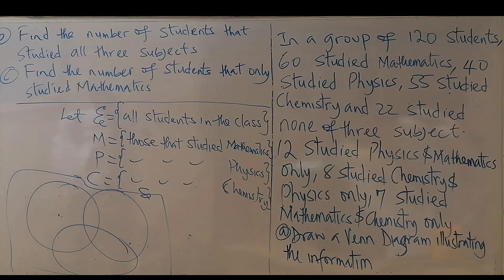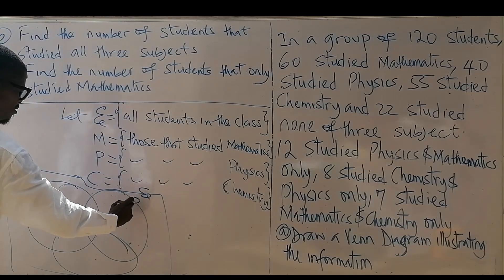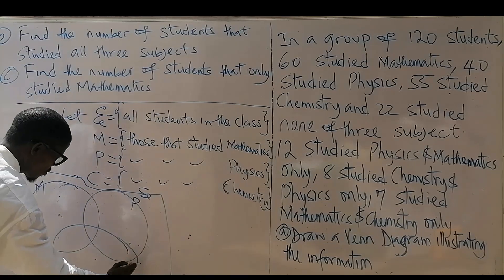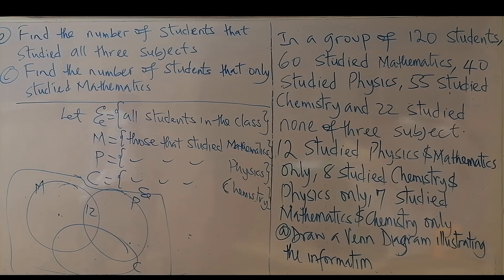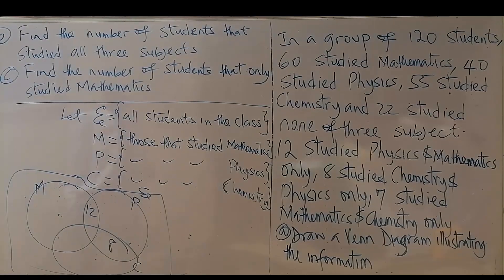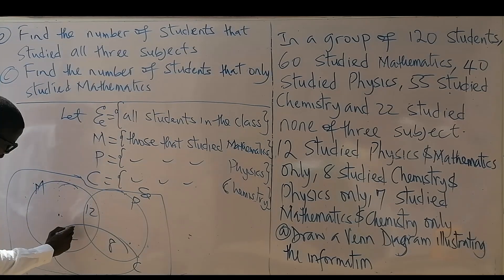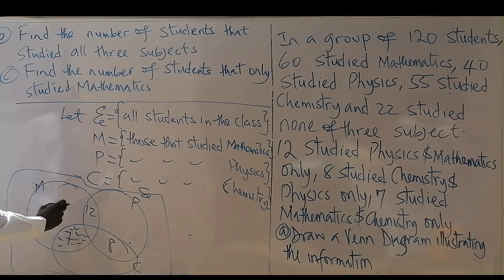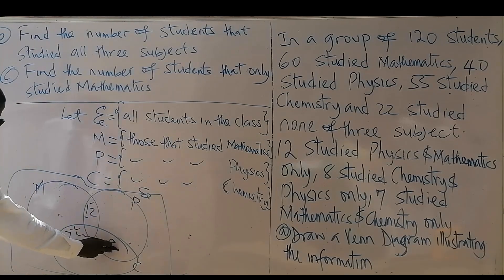We are told that 12 studied physics and mathematics only. Let's make this one mathematics, this one physics, and the last one chemistry. Twelve studied physics and mathematics only, eight studied chemistry and physics only — there are eight. Seven studied mathematics and chemistry only — that's seven. Each of these values goes only in the overlapping region of those two circles, not including the center.